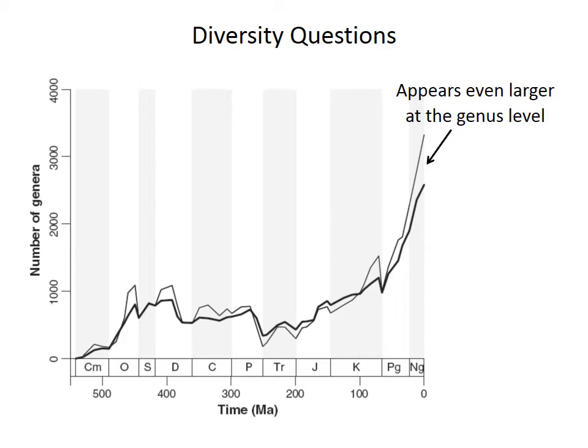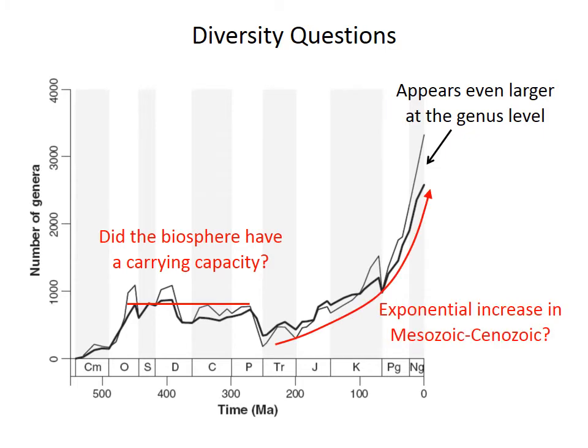In both curves, diversity is fairly constant from the late Ordovician through the Permian. This has been called the Paleozoic Plateau, and it raises the question: does this imply some sort of carrying capacity or limit on how many genera can be present? However, the Mesozoic and Cenozoic increase blew right past that limit. So did the carrying capacity change, and if it did, why? These have been big unanswered questions for 20 to 30 years.